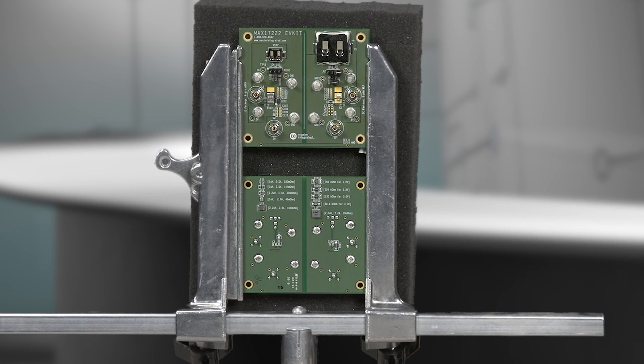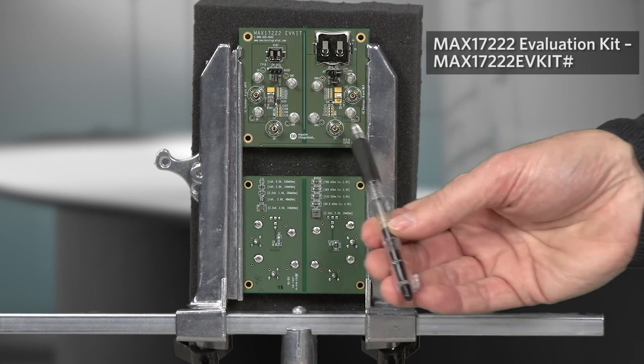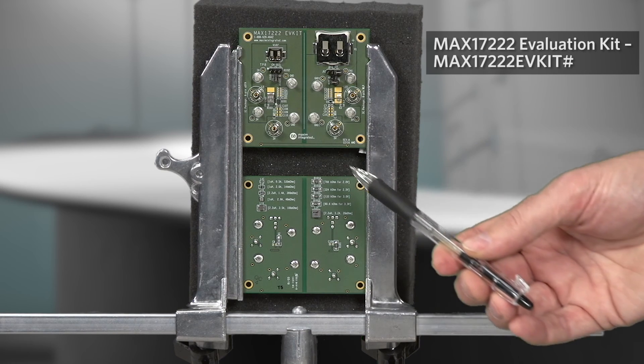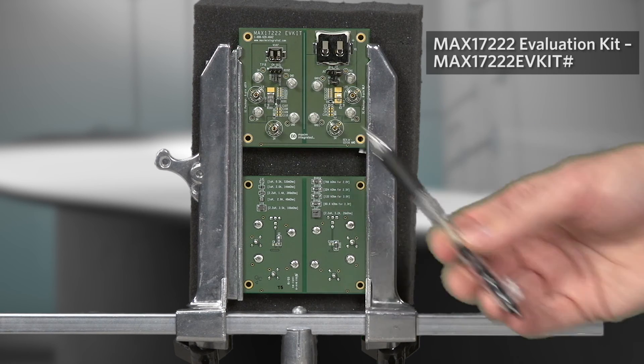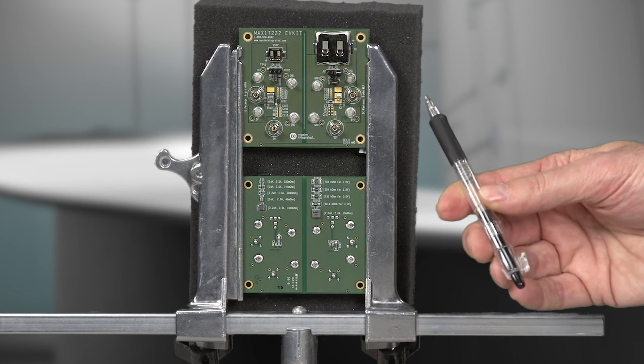Let's look a little bit at the EV kit. The EV kit has two different versions of the part available for evaluation. You've got a TDFN version, which is a little bit larger and easier to handle. And then you've got the ultra small 2x3 WLP version,